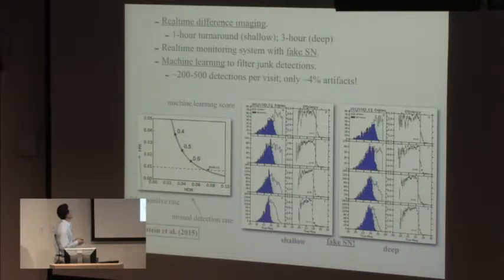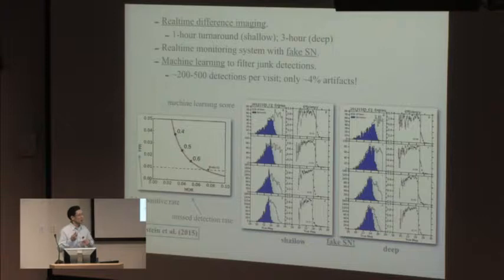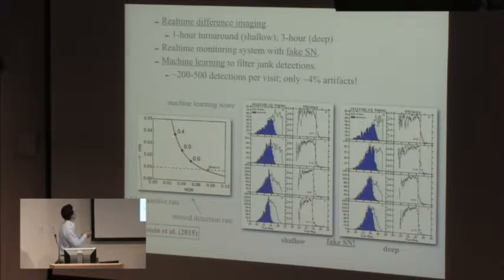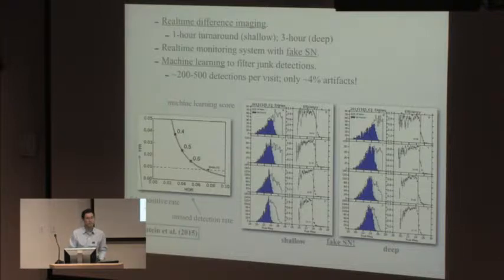A graduate student at Berkeley solved this issue. He developed a machine learning algorithm that looks at the stamps, little cutouts of every detection, looks at the pixel values, and filters out as much junk as possible. It works remarkably well. Right now, when we visit a single supernova field, we're getting about 200 to 500 detections. Almost all are real astronomical transients.